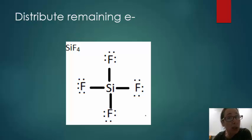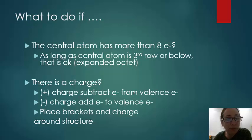Now it's not always going to be this easy. Sometimes it will be when you just distribute everything and everyone's happy. But what if you put your extra atoms on the central atom and the central atom has more than eight electrons? As long as the central atom is third row or below, that's okay because of what's known as the expanded octet. If it's not third row or below and it has more than eight, then there's a mistake somewhere. Go back and count your electrons.